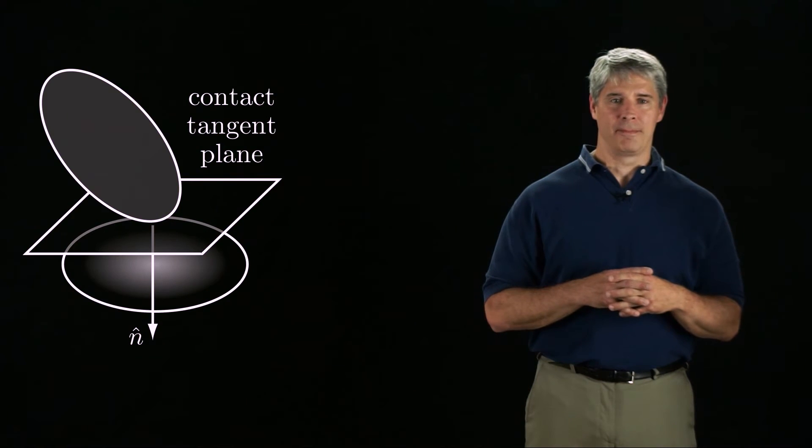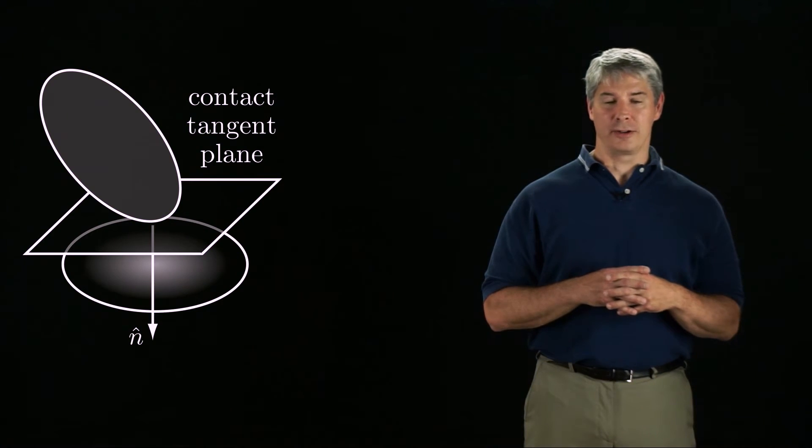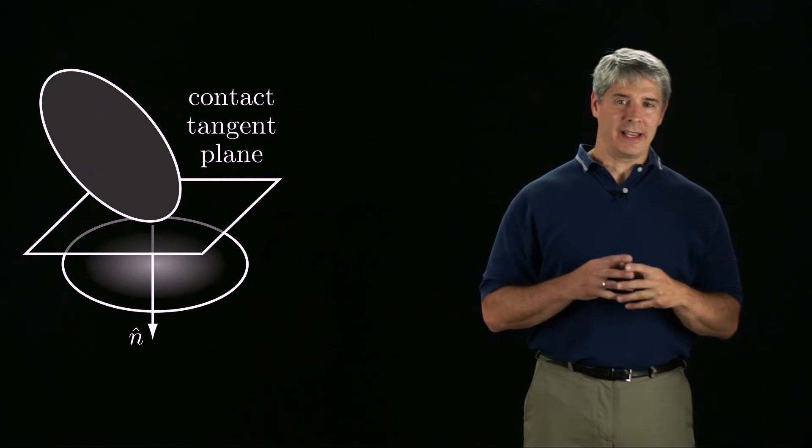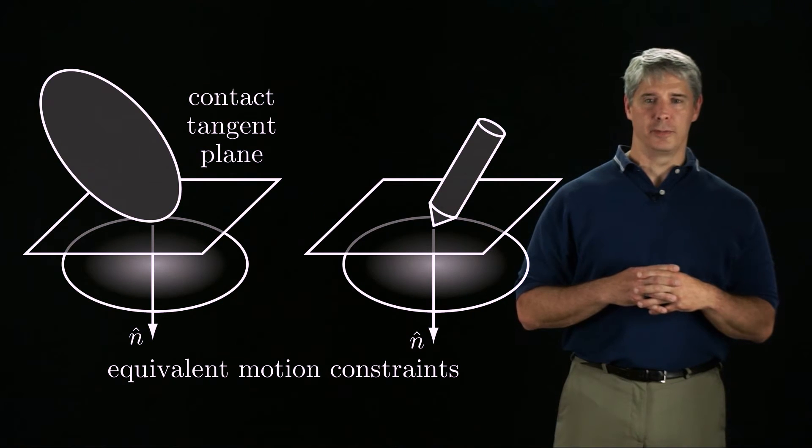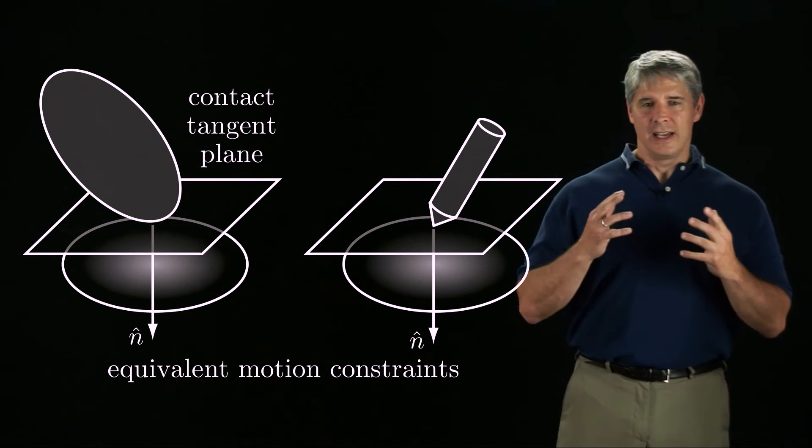If the movable body is a spatial body contacted by another spatial body, the unit normal is orthogonal to the tangent plane. Again, because we ignore curvature, this pencil provides the same motion constraints on the movable body.